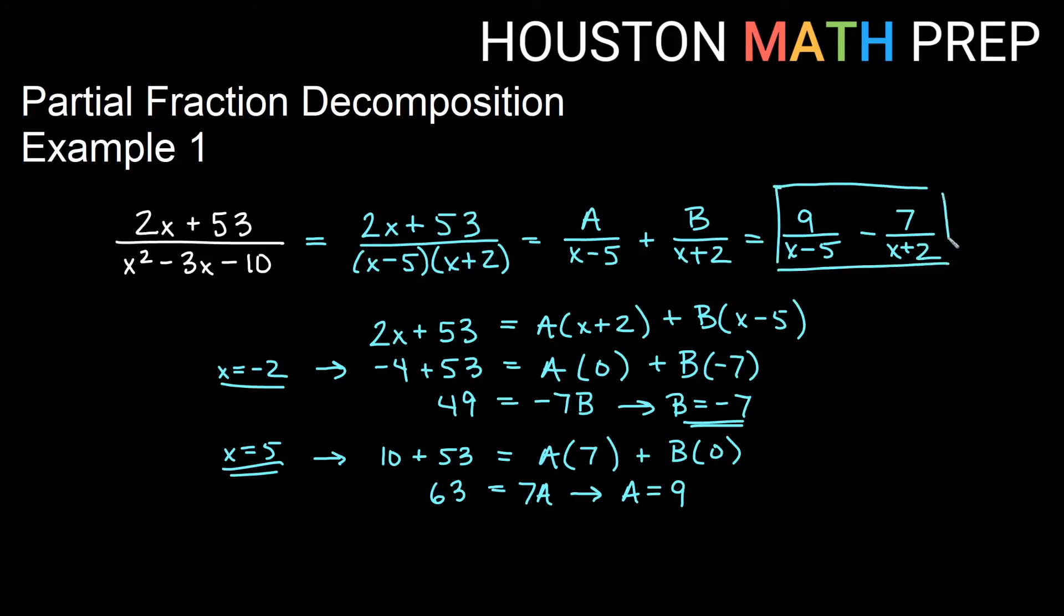Okay, that's our first example. Setting both factors equal to zero, we were able to get A and B. Check out some more examples. We have a few more. We'll see you in the next one.